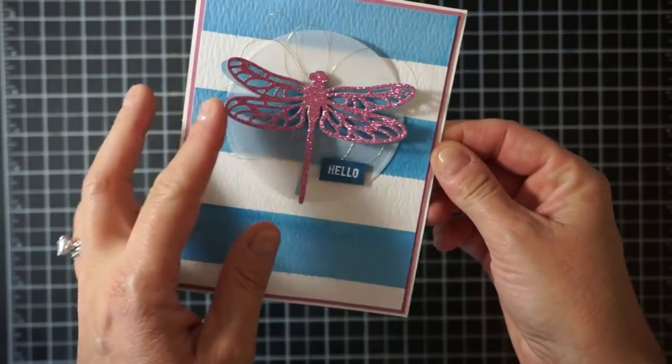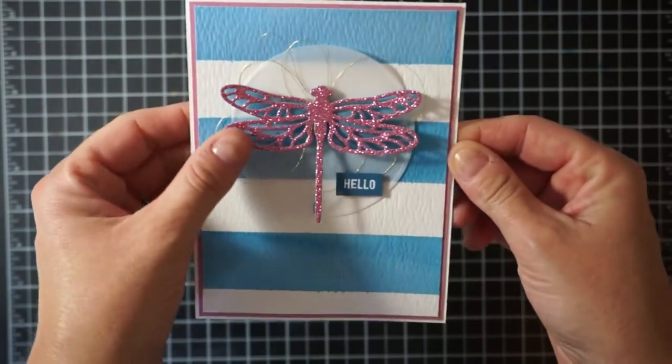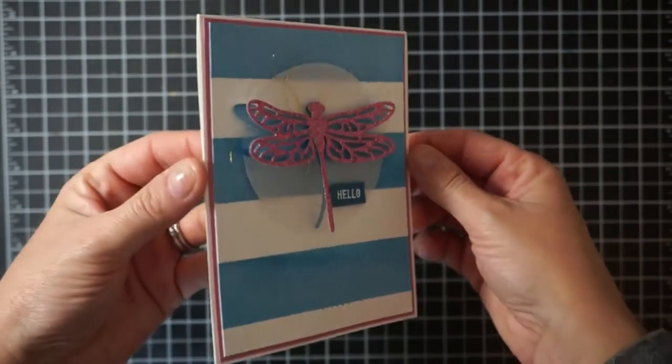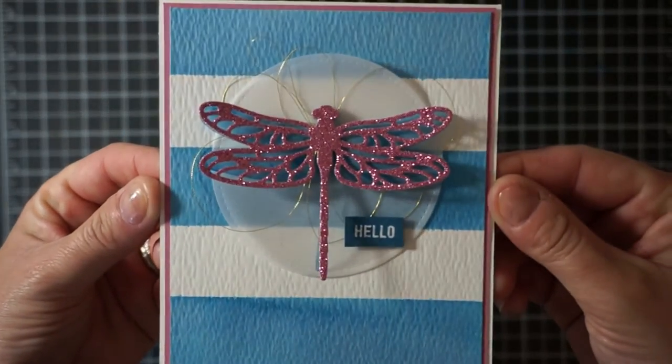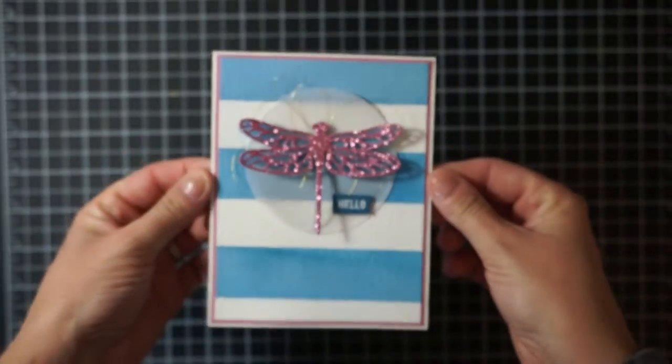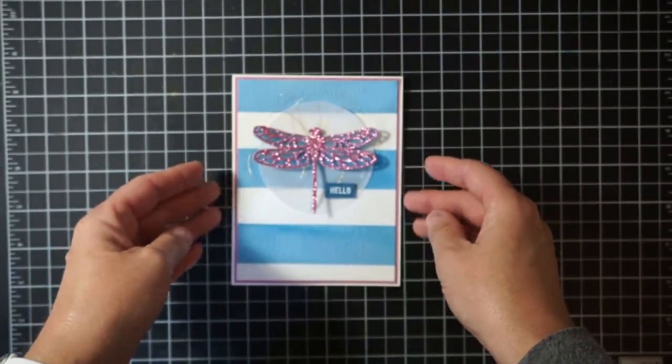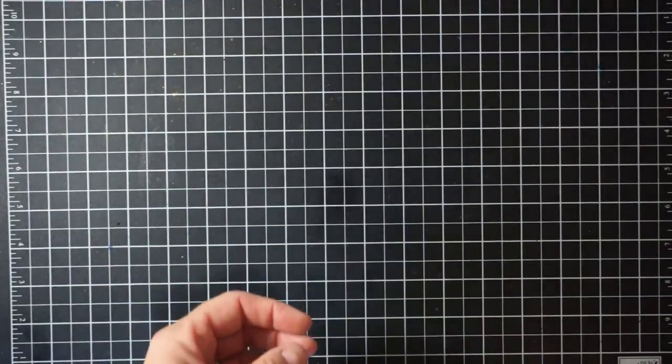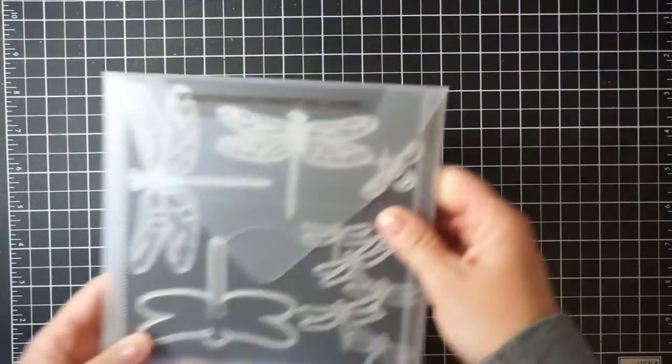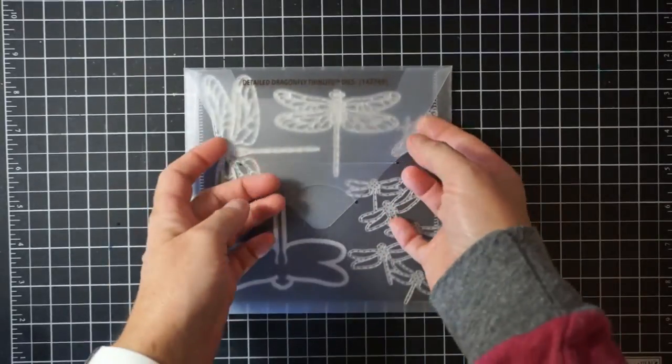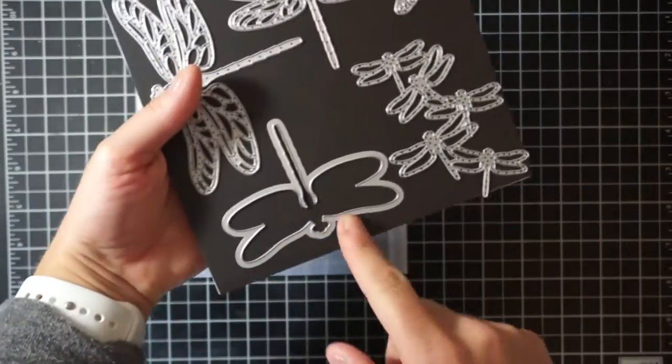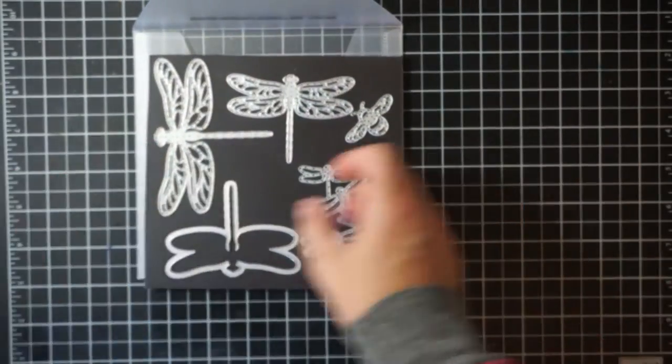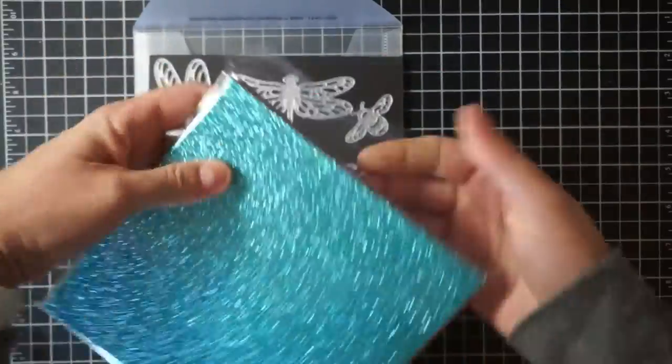Today's card we're going to be using the beautiful detailed dragonfly thinlets, some of the gorgeous glimmer paper that you could get free with celebration, and I'm going to be showing you how to make this really cool watercolor striped background. It's super easy but it gives you a beautiful background. So I've got the detailed dragonfly thinlets from the Stampin' Up 2017 occasion catalog and we're going to be using the smaller detailed dragonfly and the outline image as well.